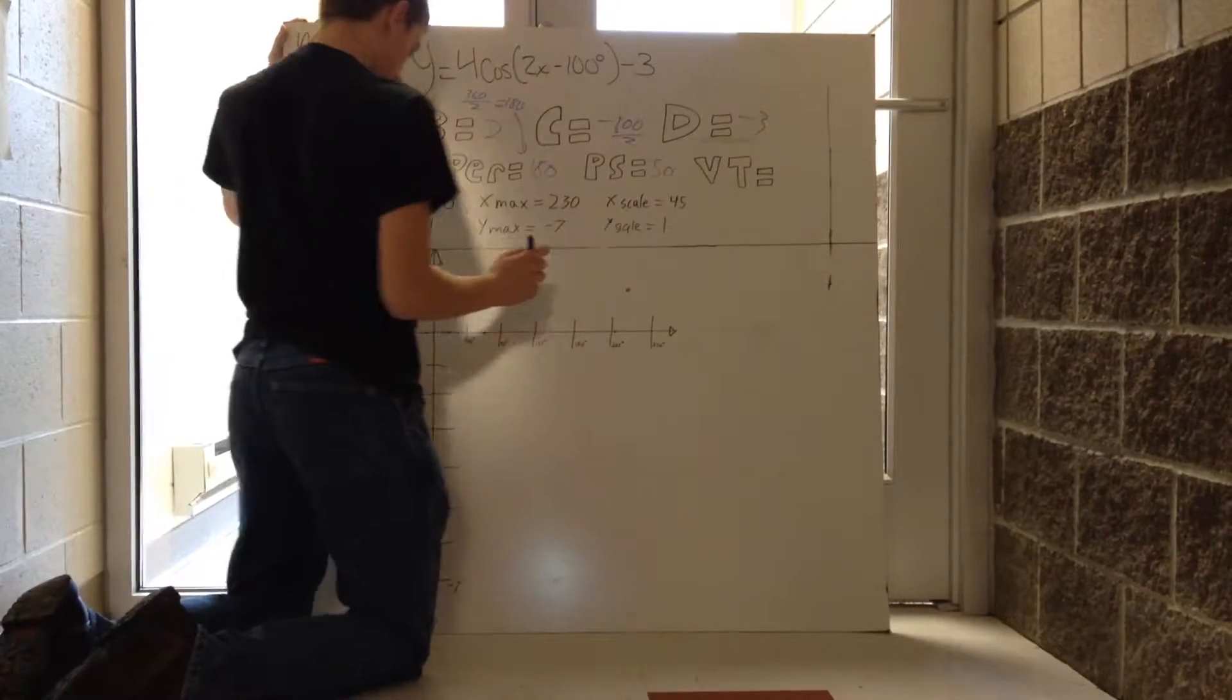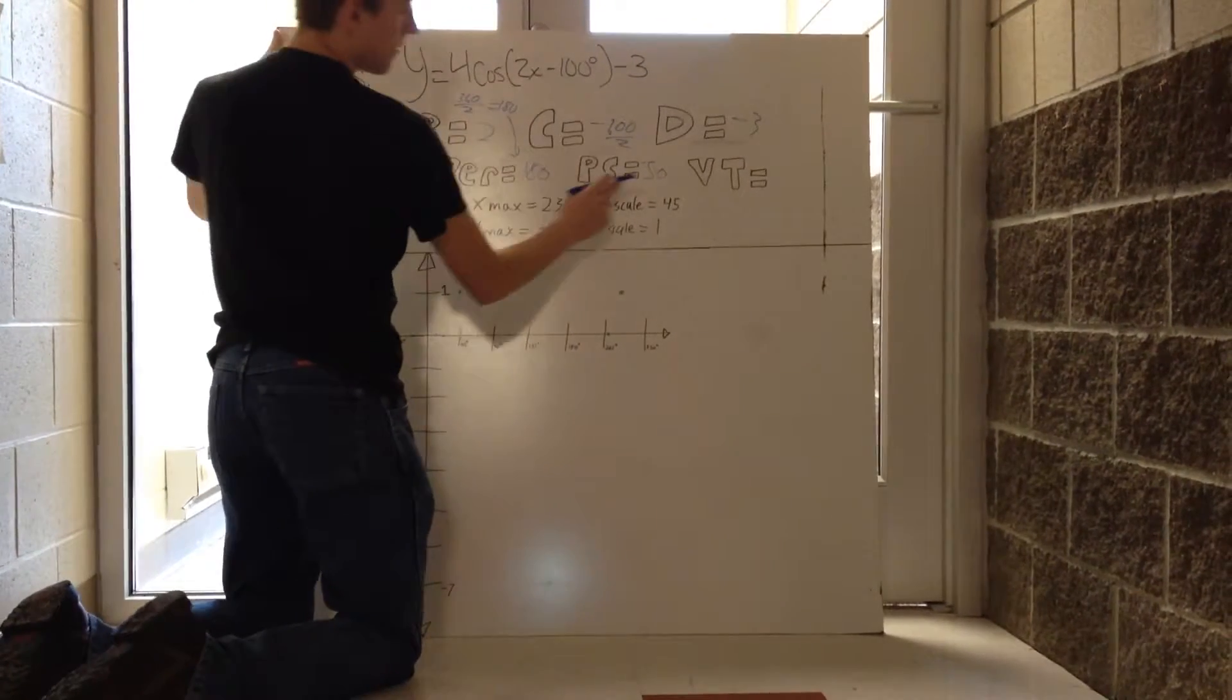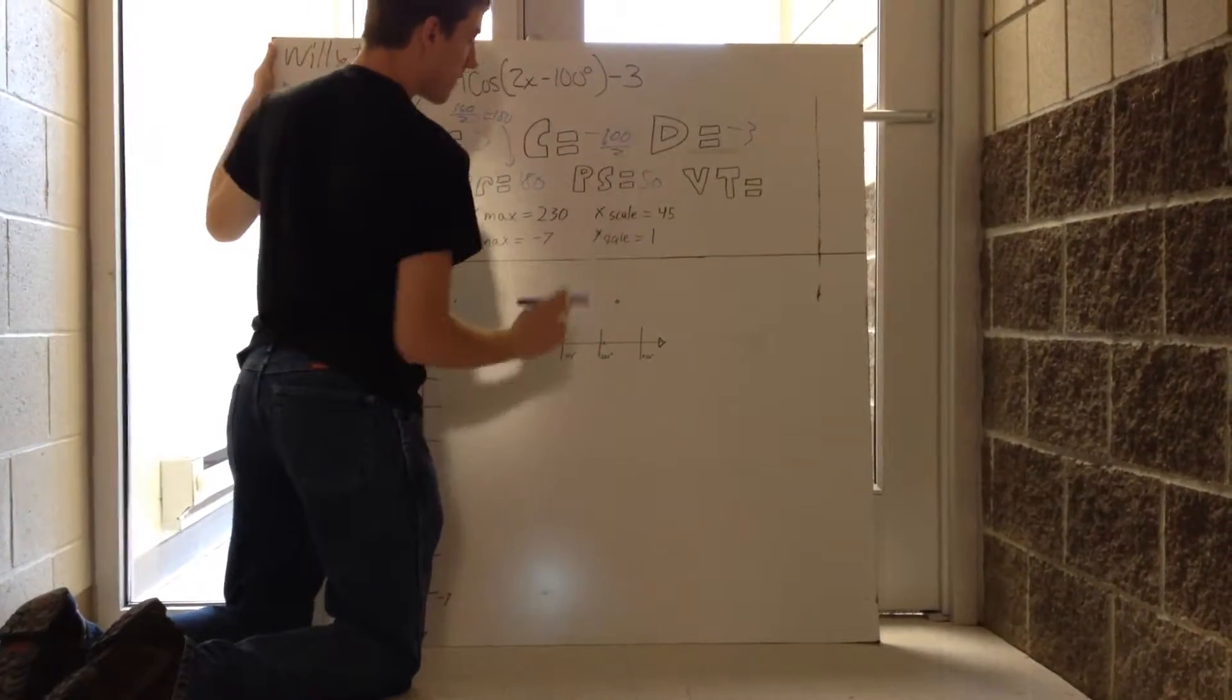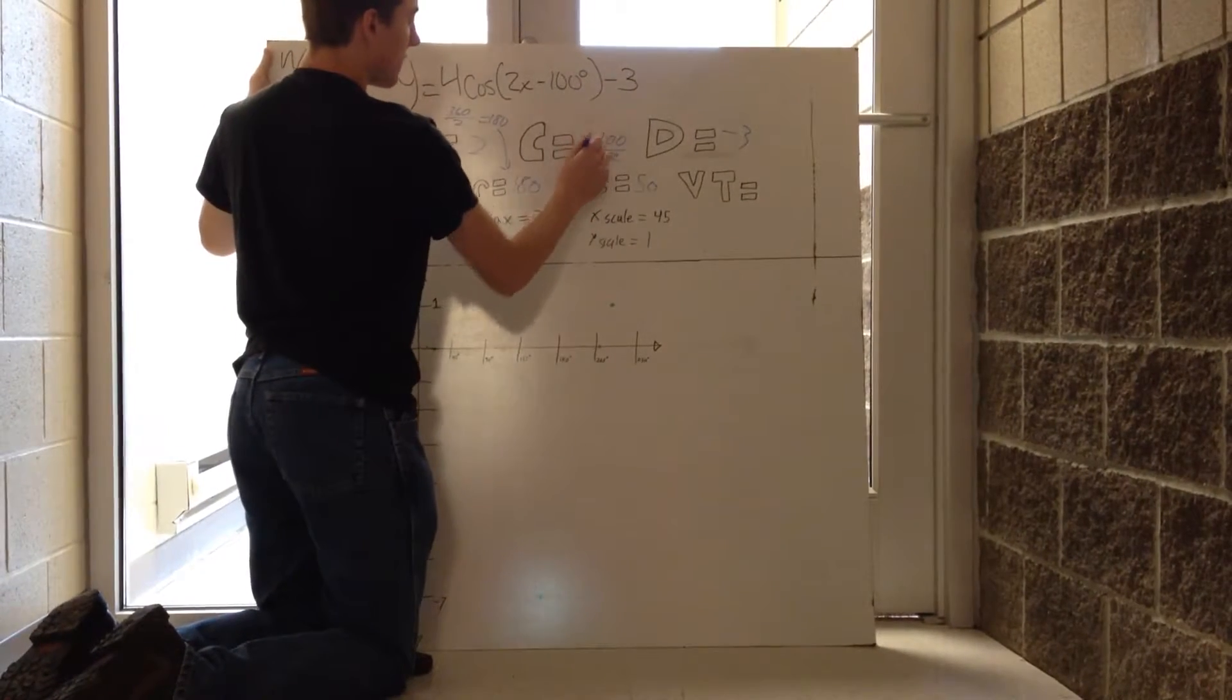It'll be negative 50. It will be just normal 50 because it's negative divided by negative, so that becomes positive.